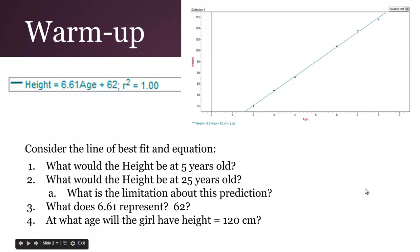As a warm-up, we look at this line of best fit. The numbers are not so bad to read, but I just highlighted and made the equation here bigger. So consider the line of best fit and the equation: what would the height be at 5 years old?